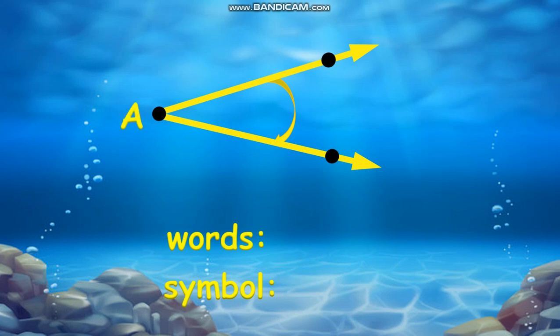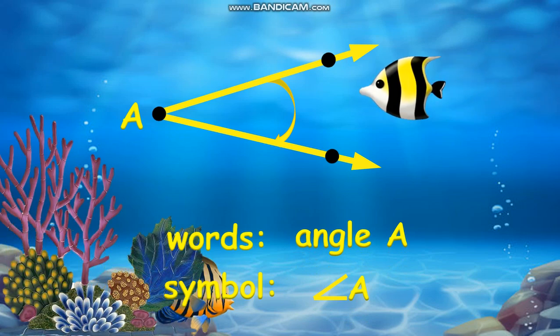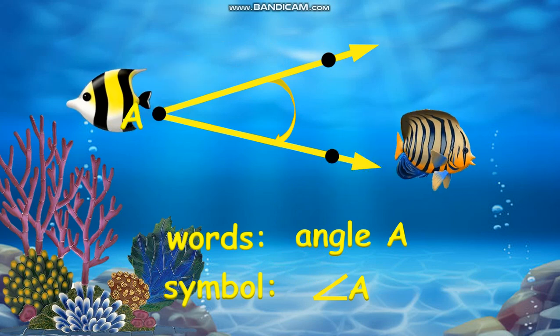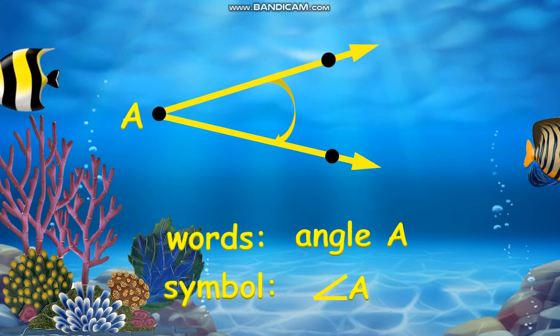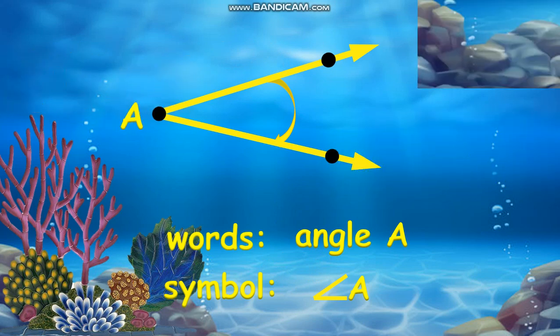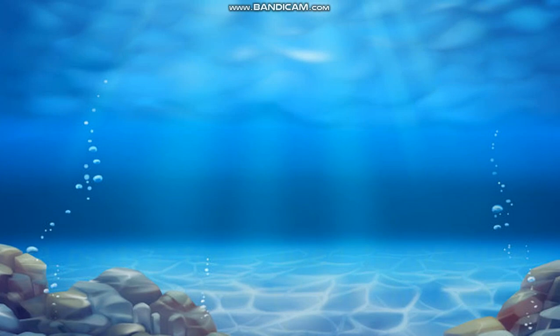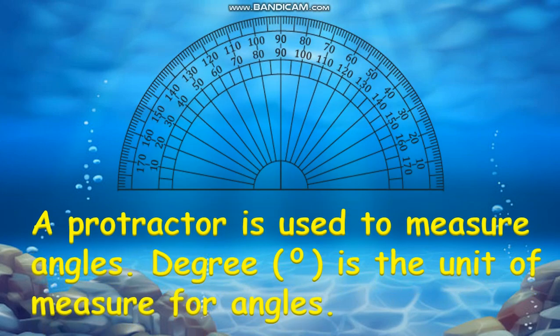Angles can be classified by their measurement. We use a protractor to measure angles, and degrees as the unit of measure.